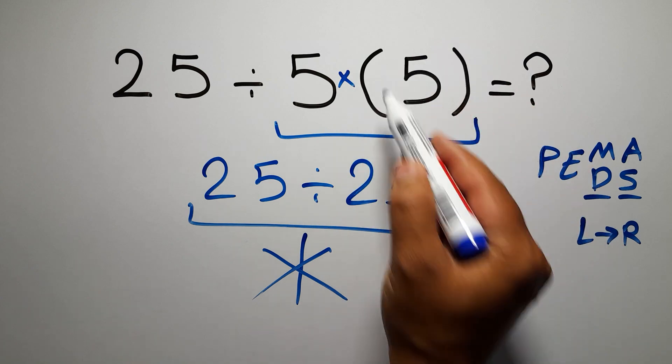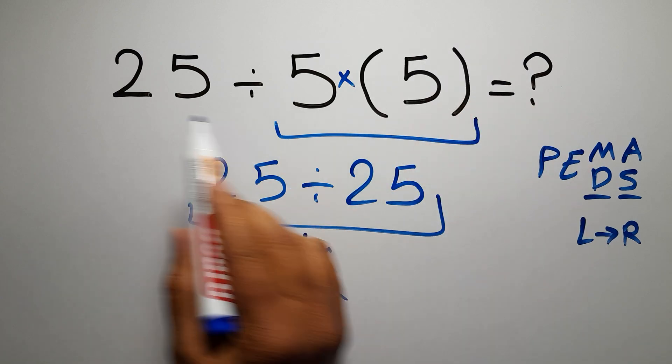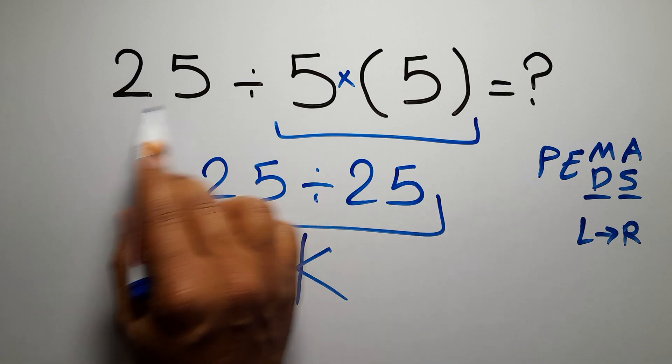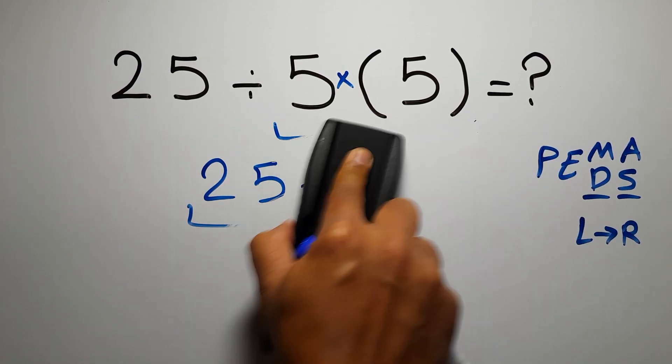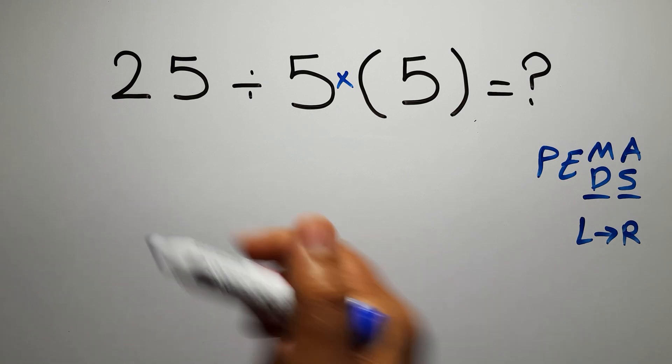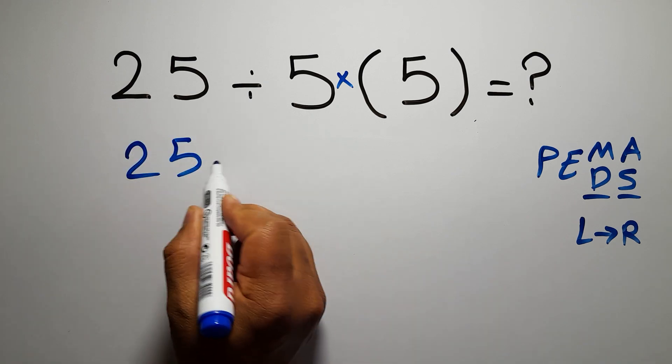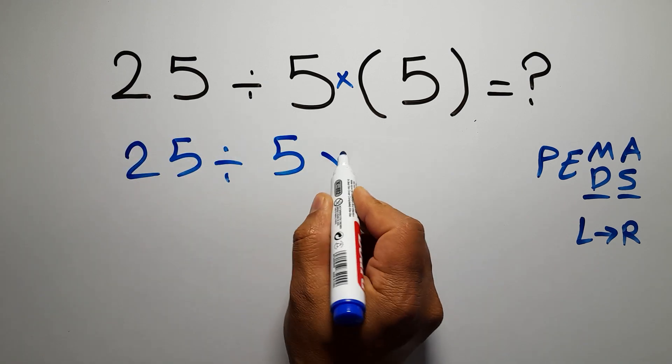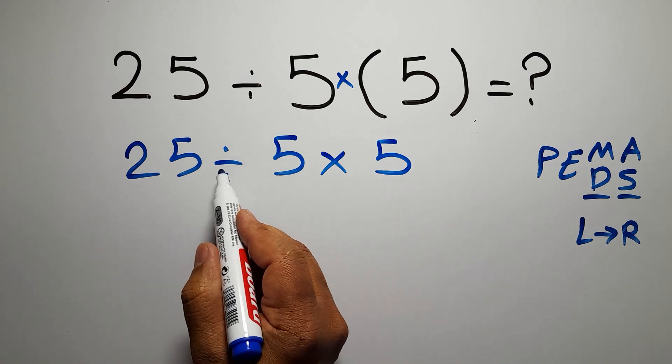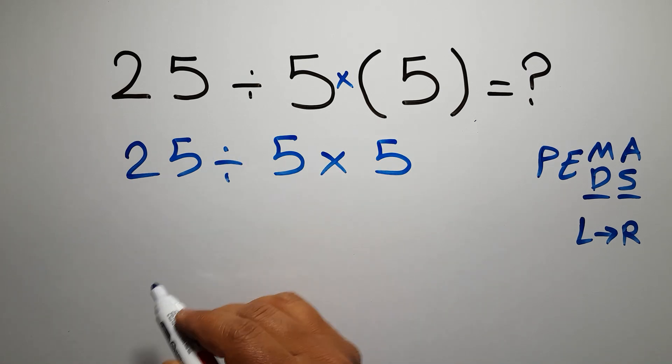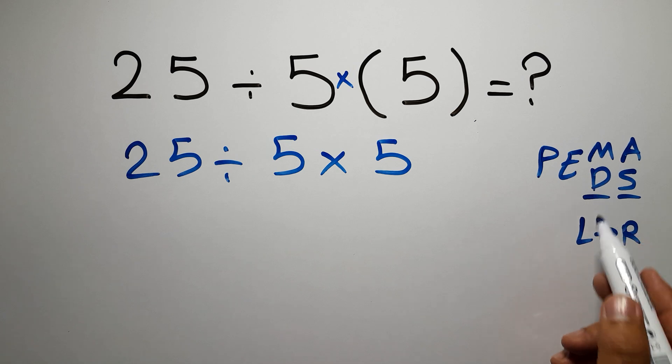we have just 5. So instead of this expression, we can write 25 divided by 5 then times just 5. Now we have one division and one multiplication. As I said, multiplication and division have equal priority